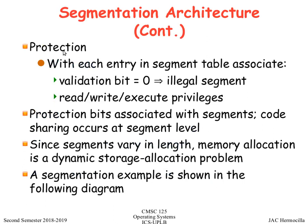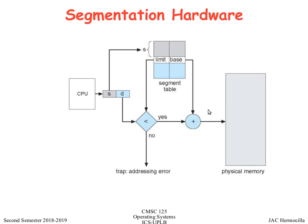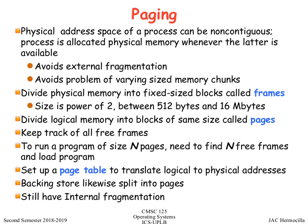The problem with segmentation is that it still suffers from internal fragmentation because segment sizes are variable. A solution to this problem is paging. The idea of paging is to divide memory into fixed-size blocks. Physical address space allows non-contiguous process placement, and the process is allocated physical memory whenever available. Paging avoids external fragmentation because chunk sizes are fixed.